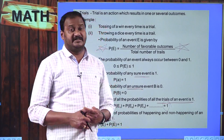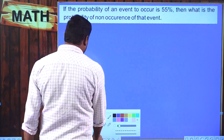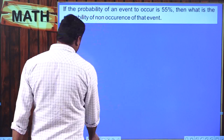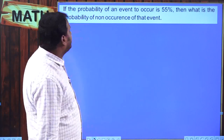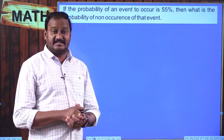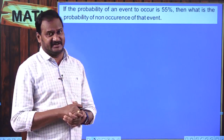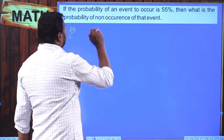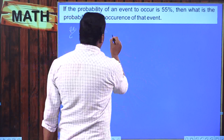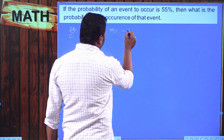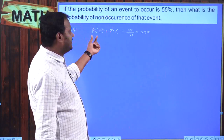Let us look at the problems. The first problem: if the probability of an event to occur is 55 percent, what is the probability of non-occurrence of that event? These problems can be solved easily using the formula effectively. Probability is always between 0 and 1, so express results in decimal form. P(E) = 55% = 55/100 = 0.55.